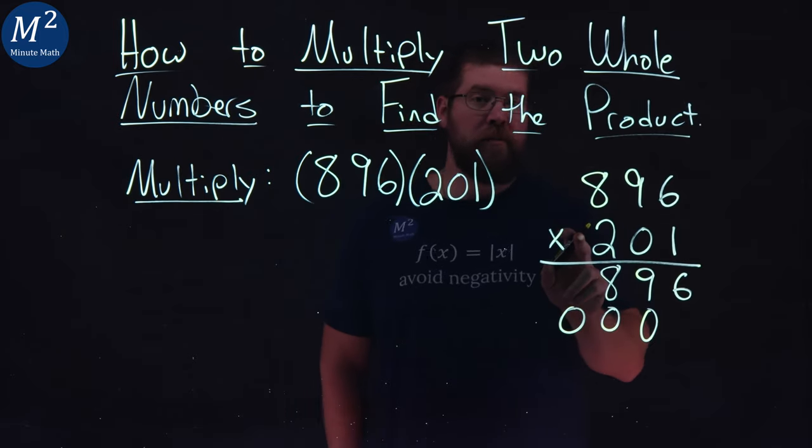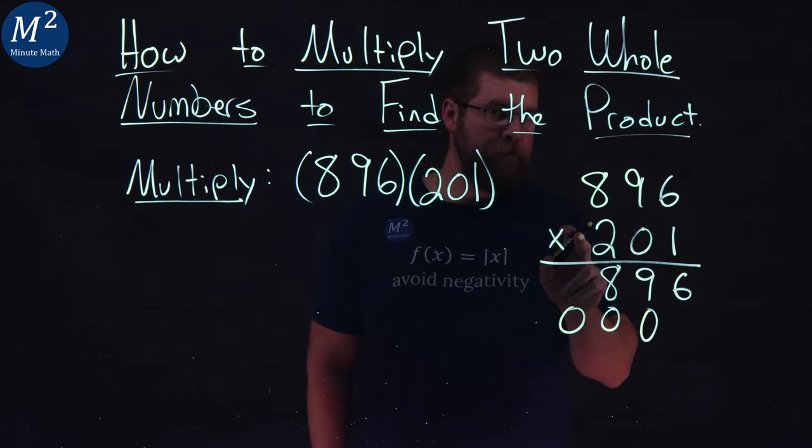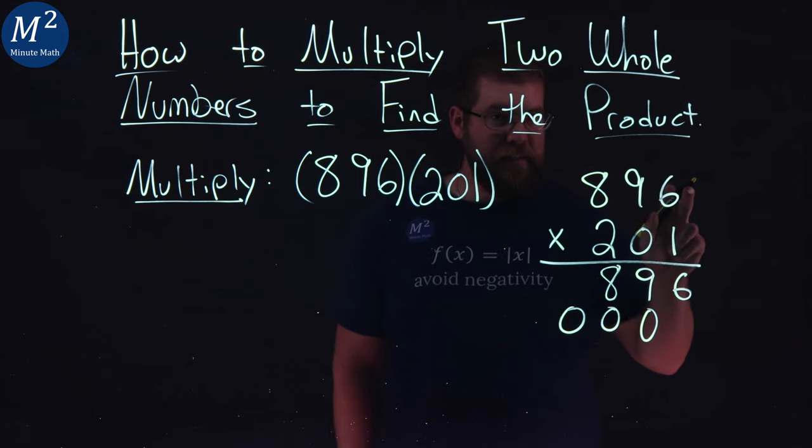Lastly, we have the 2 in the hundreds place now. 2 times 6 is 12. Make sure that 2, the second digit, goes in the hundreds place and we carry the 1 here.